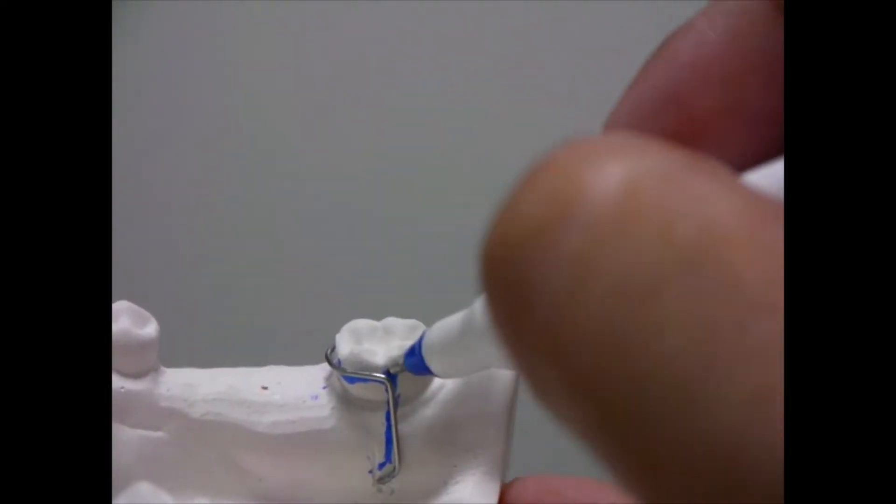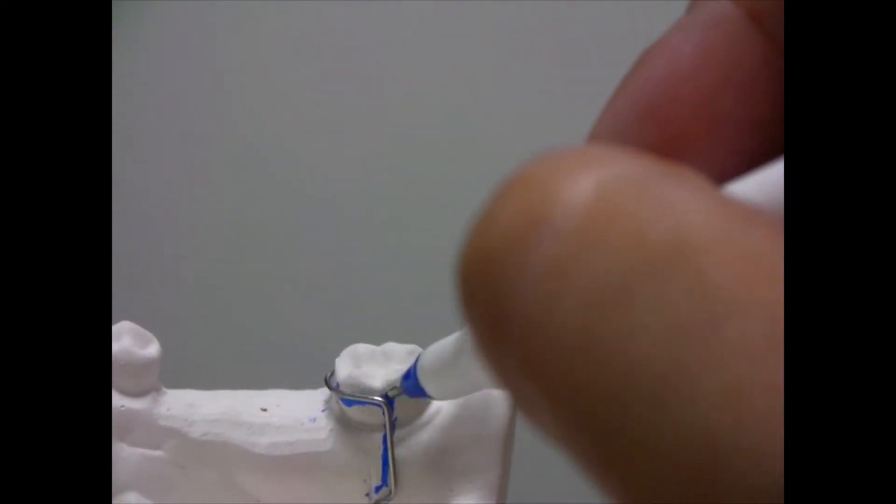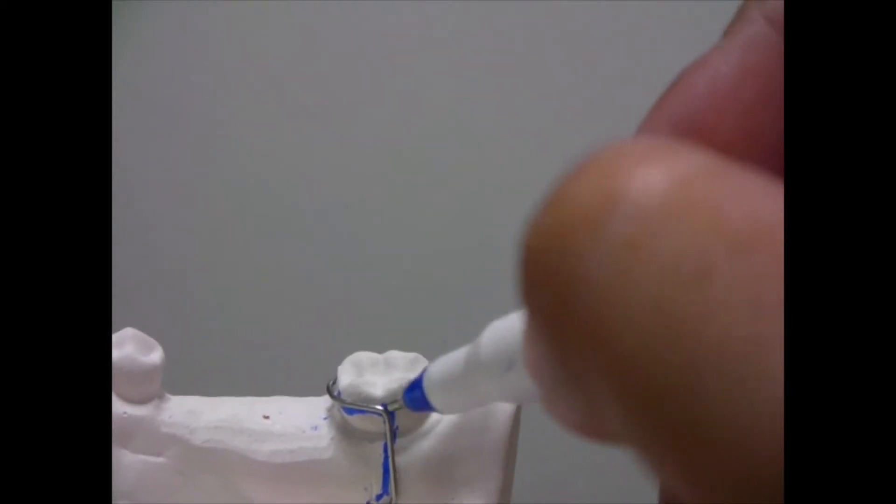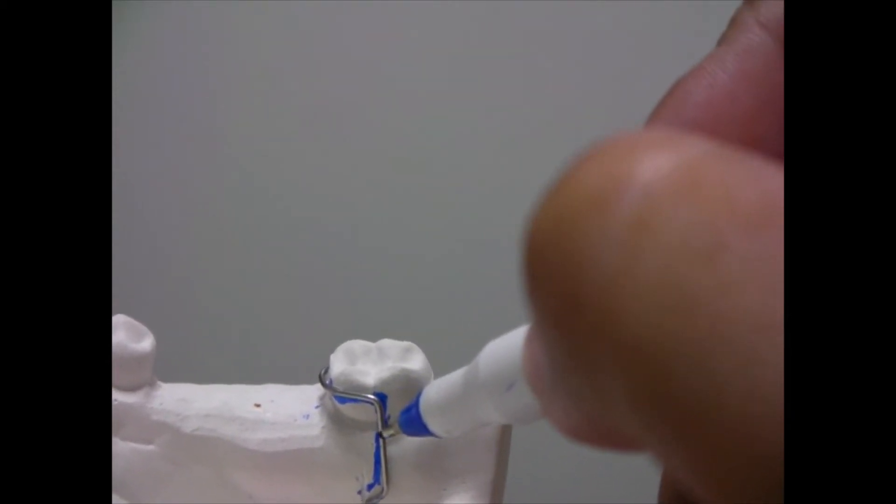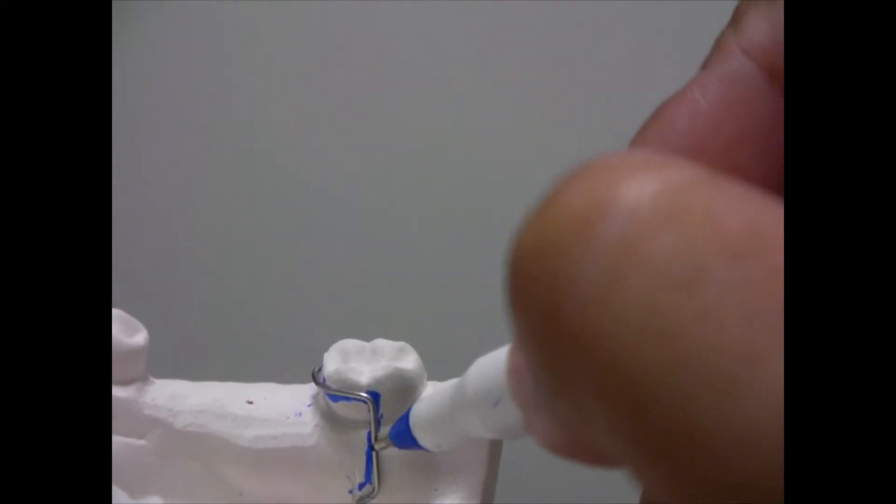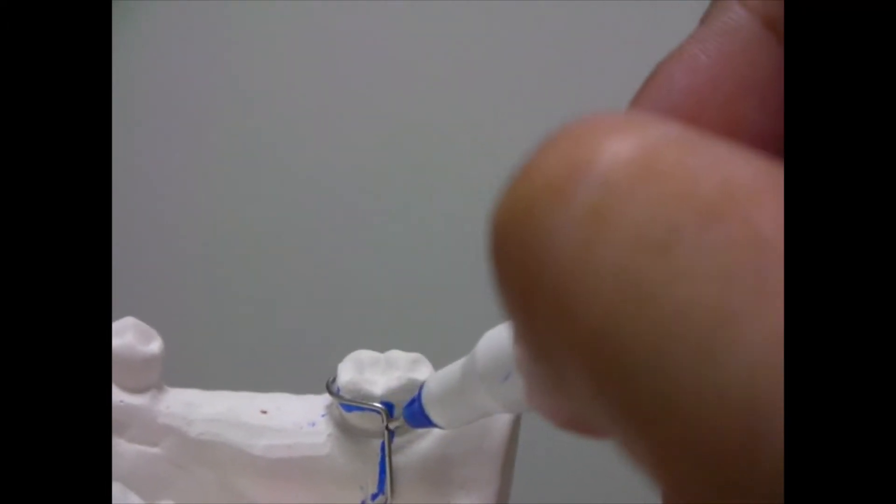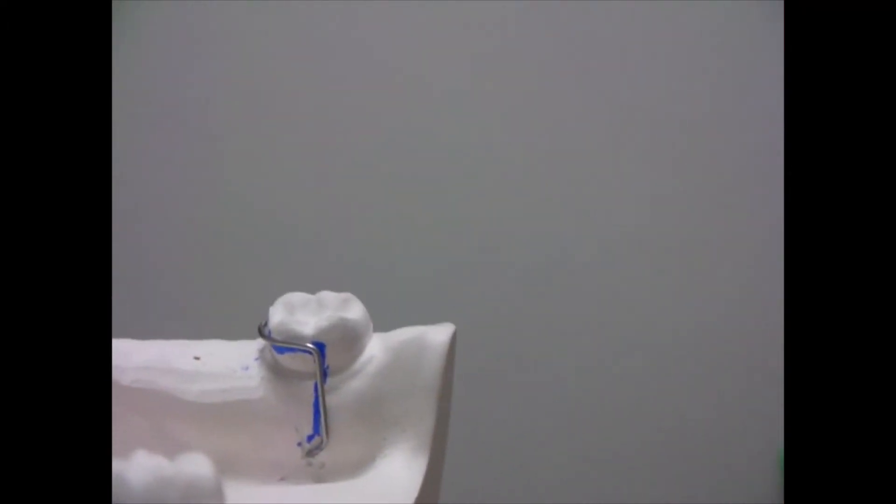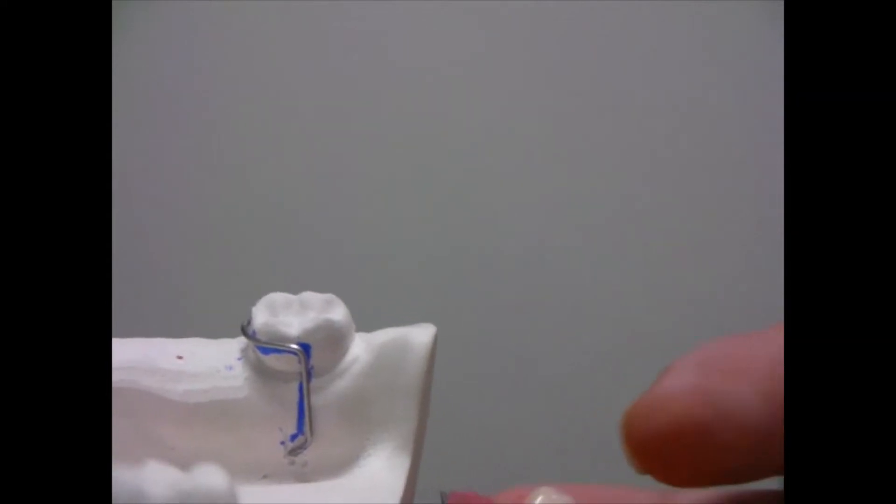This part is the reciprocal arm which is going to follow the contour of the tooth towards the lingual side or the palatal side depending on the maxillary or the mandibular arch and then we have this minor connector. This minor connector is actually going to connect this part of the clasp to the palatal plate like you see over here.